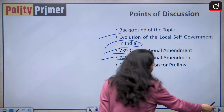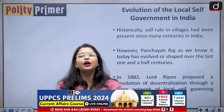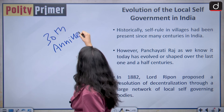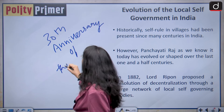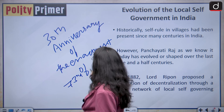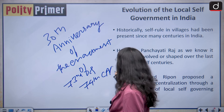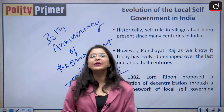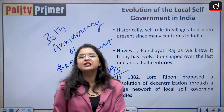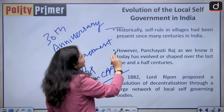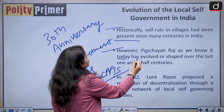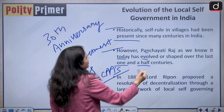If I talk about the evolution of local self-government in India — we have recently celebrated the 30th anniversary of the enactment of the 73rd and 74th constitutional amendment acts. So it has been 30 years since we finally granted constitutional status to our local self-government institutions. Historically, self-rule in villages had been present since many centuries in India. However, Panchayati Raj as we know it today has evolved over the last one and a half century.